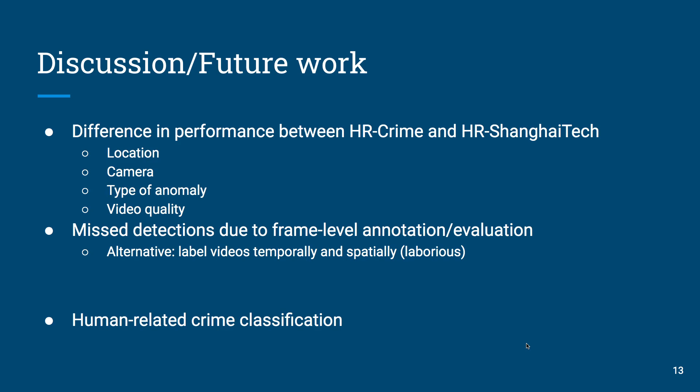Our results show a clear difference in performance between HR-ShanghaiTech and HR-Crime. We suspect this is due to the complexity gap between the two datasets. HR-ShanghaiTech consists of videos shot on the same university campus, while HR-Crime is a collection of YouTube videos where each video is filmed in a different location. Also, the types of anomalies differ greatly: HR-ShanghaiTech contains anomalous events such as running and jumping, while HR-Crime consists of real-world crime scenes with natural movements that are not staged.